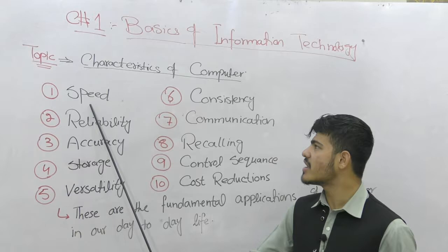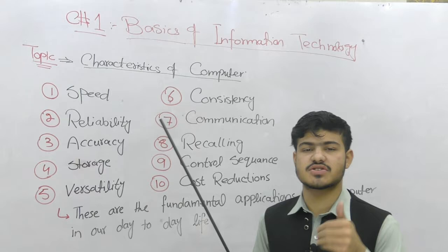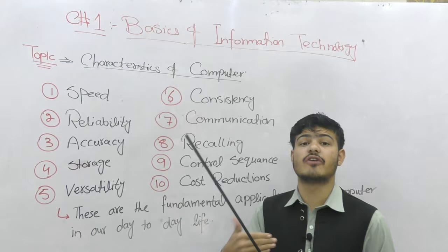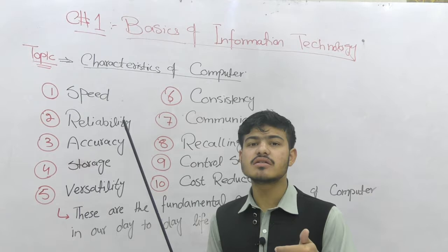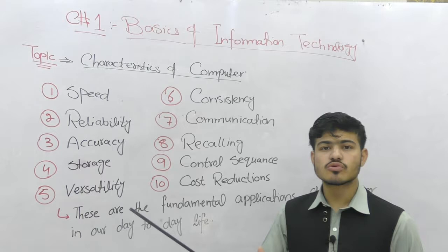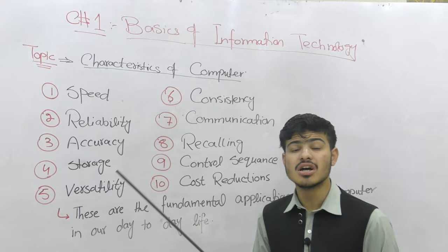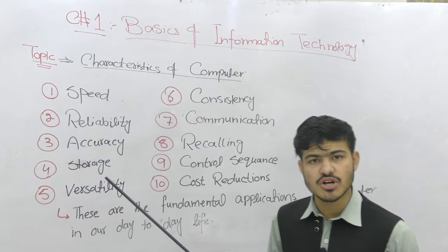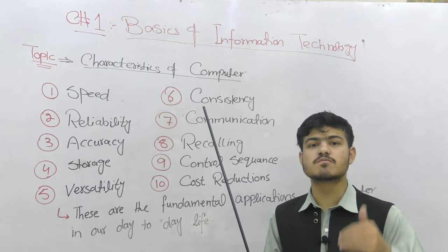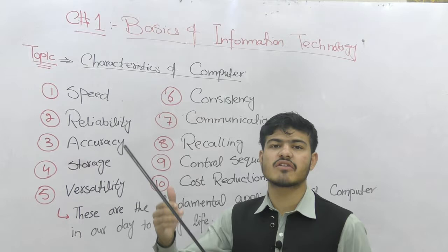Computer data processing speed is very quick and fast, measured in gigahertz and megahertz. The computer can process data very fast and quickly. If a human is considered, the computer is much faster than a human being. The computer is faster, quicker, and the results are 100% accurate.